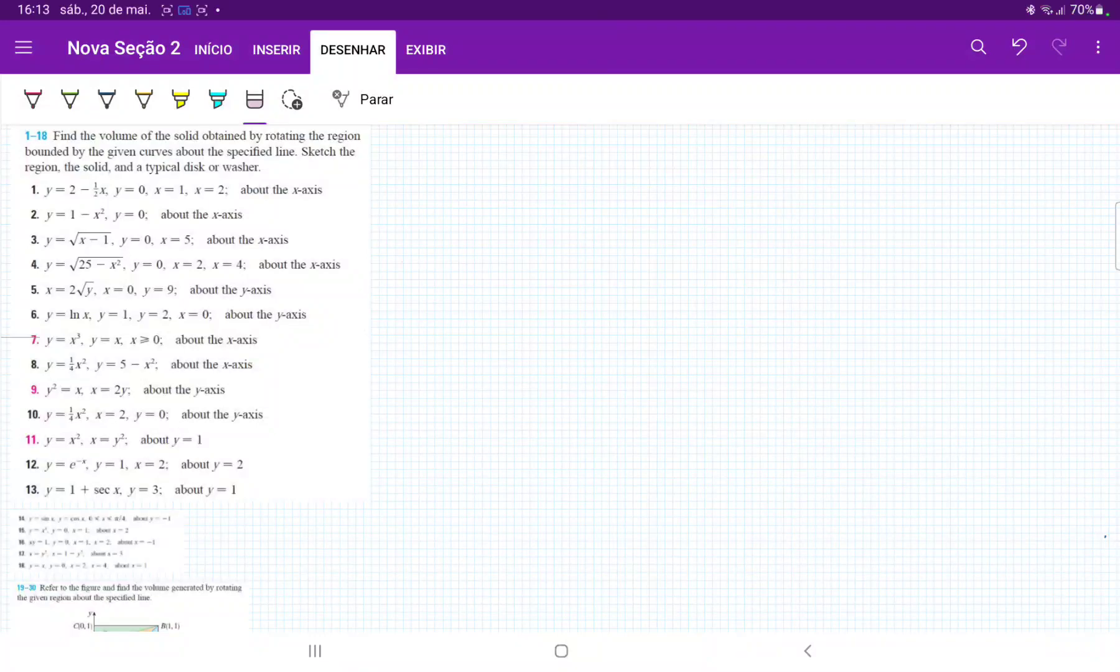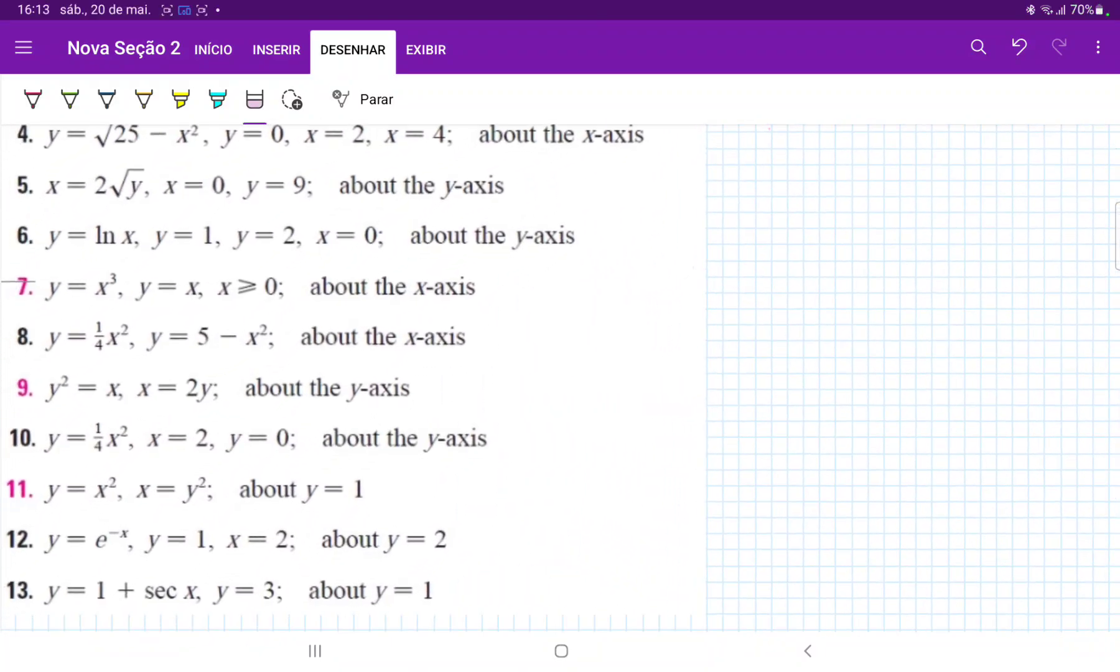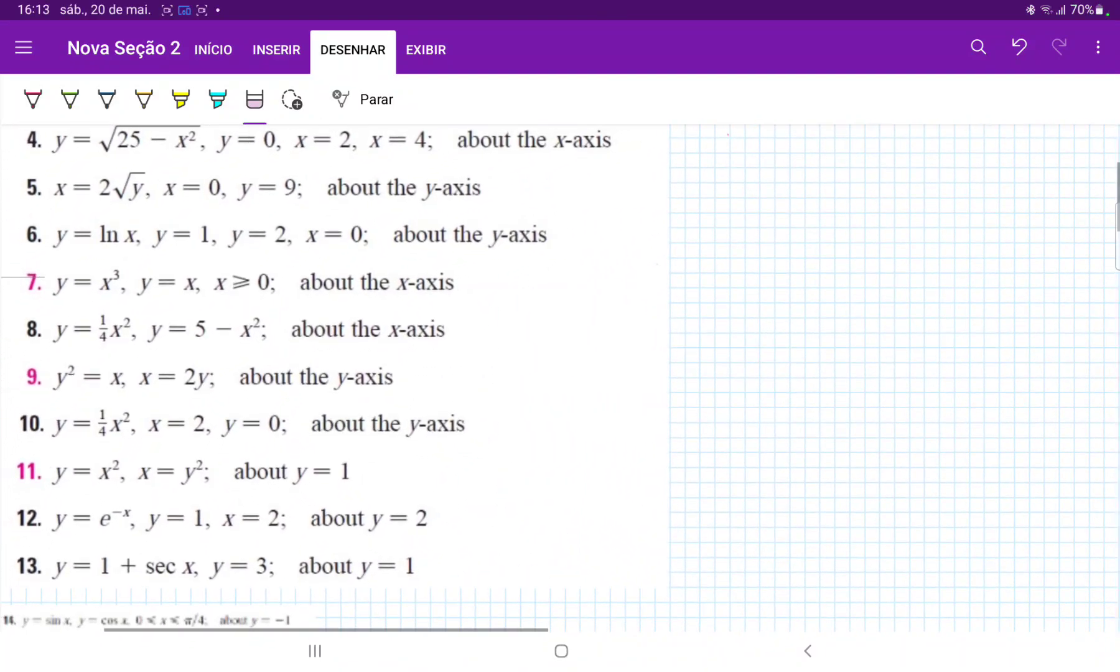So for number 7, we are drawing these curves, finding the region between them, and then in this area between them, we're going to revolve it about the x-axis. So let's draw these curves.